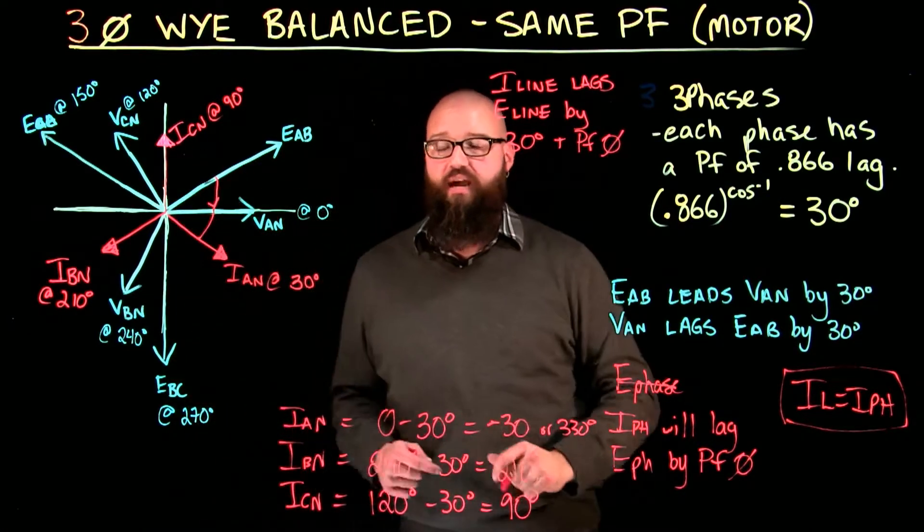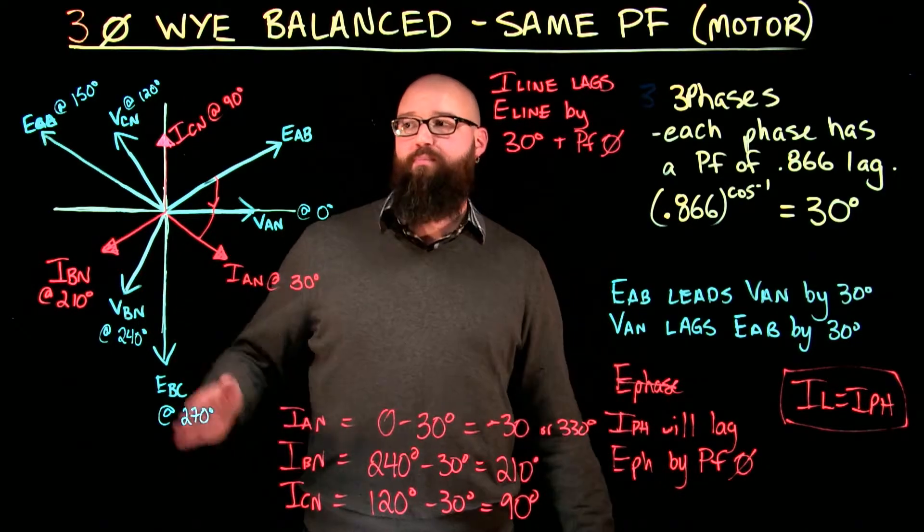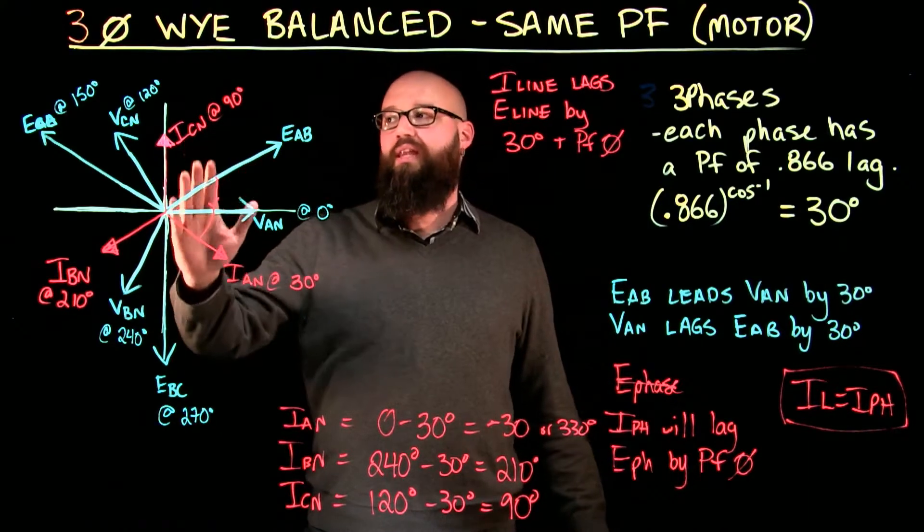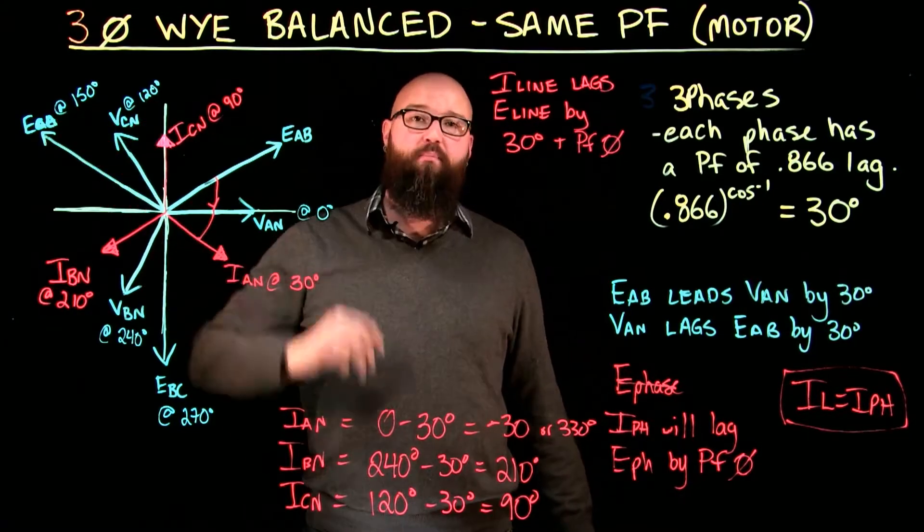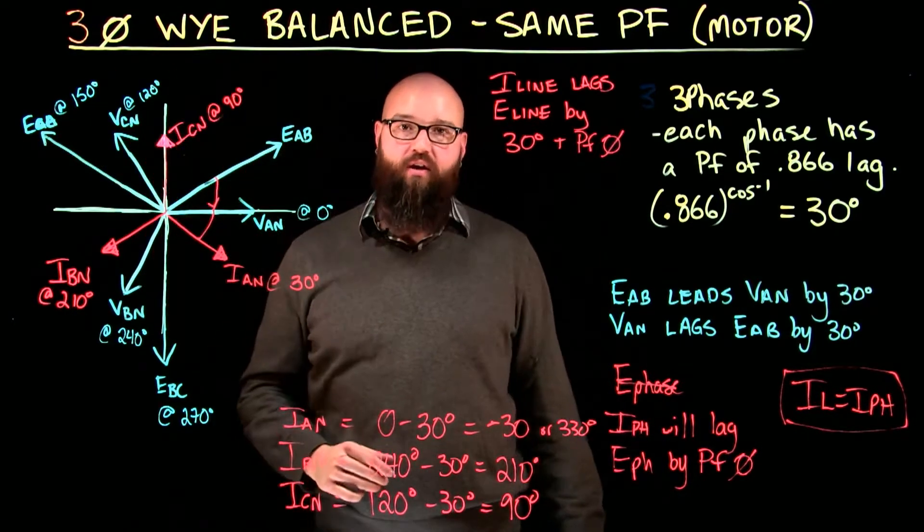Hopefully this helps. I could apply this to every one of my phasers and I could prove the same thing as well. I could say that, for example, the line current, line c current, will lag e line voltage of c by 30 degrees again plus whatever that power factor angle is.